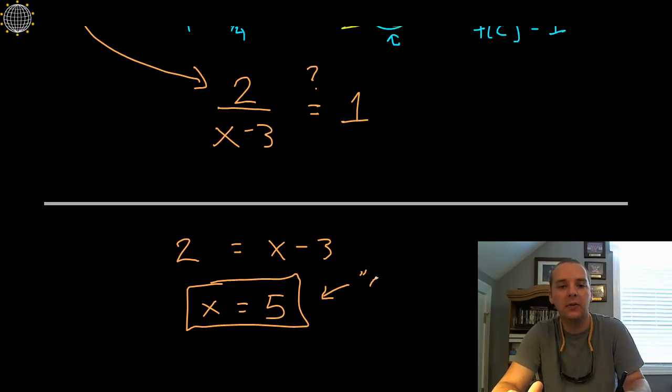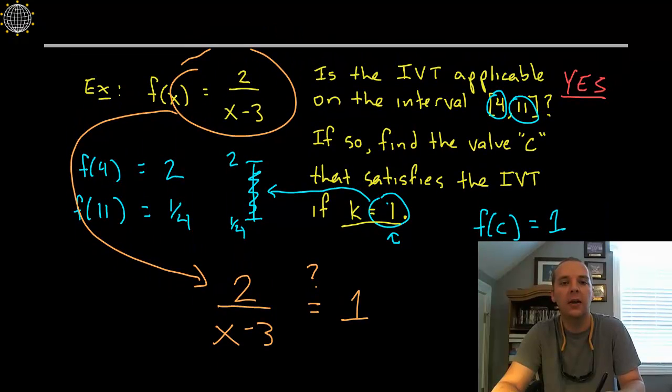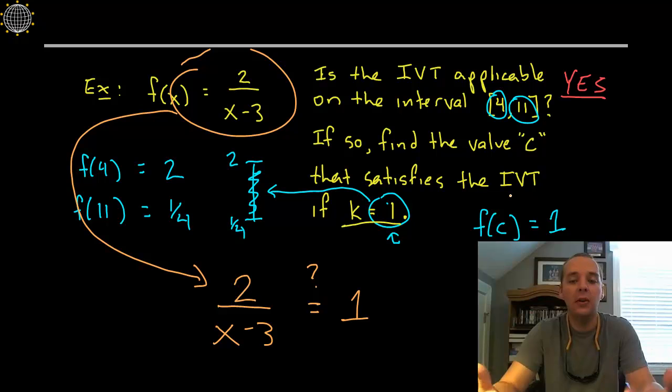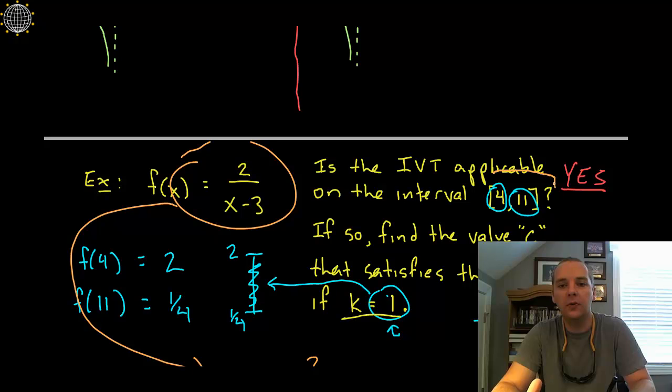So this is the value of c, that's 5, that's the x coordinate, the x value that satisfies the intermediate value theorem, because I know that there should have been an x value that f of that x value gives me 1. Now just a quick double check here, is 5 on the interval from 4 to 11? Yes it is.